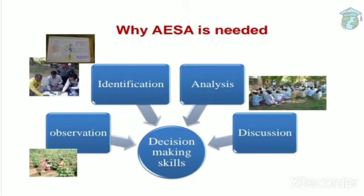Next is analysis — you try to analyze how to control the pest and analyze the field situation. After analysis comes discussion, which happens in a group. There will be one or two training officers and 20 to 25 farmers. In this group meeting, you will decide whether and how we can control the pest or manage the field. So the four steps are: observation, identification, analysis, and discussion. You can also relate these to the pictures shown.